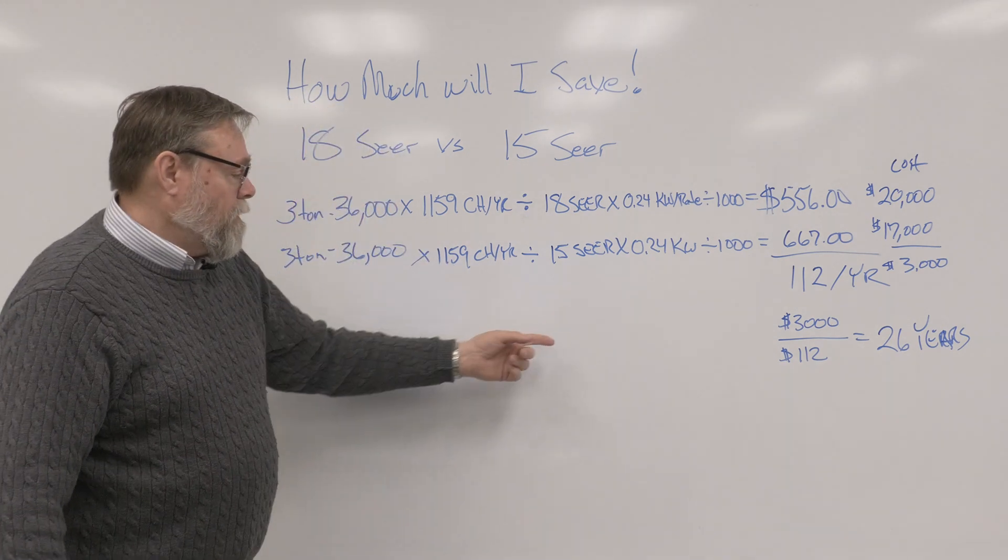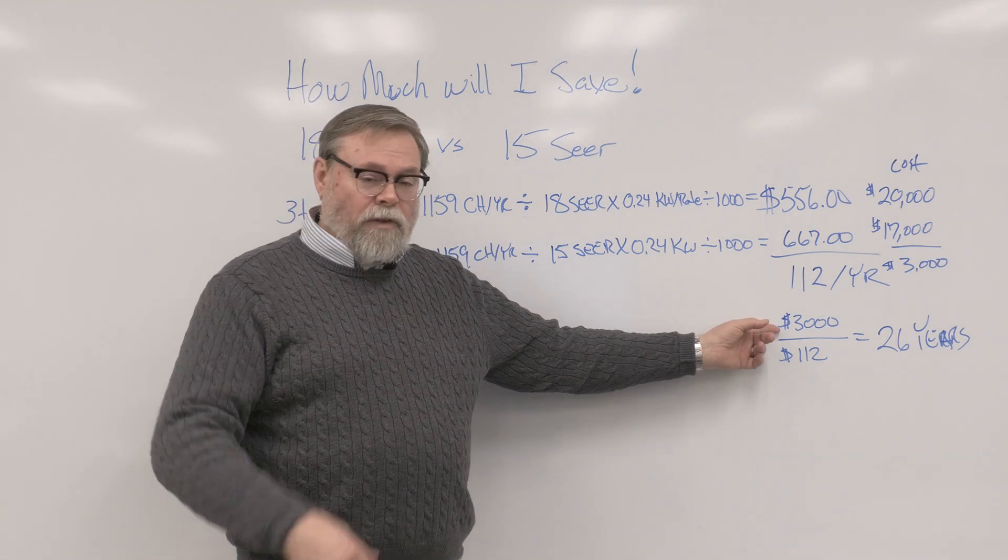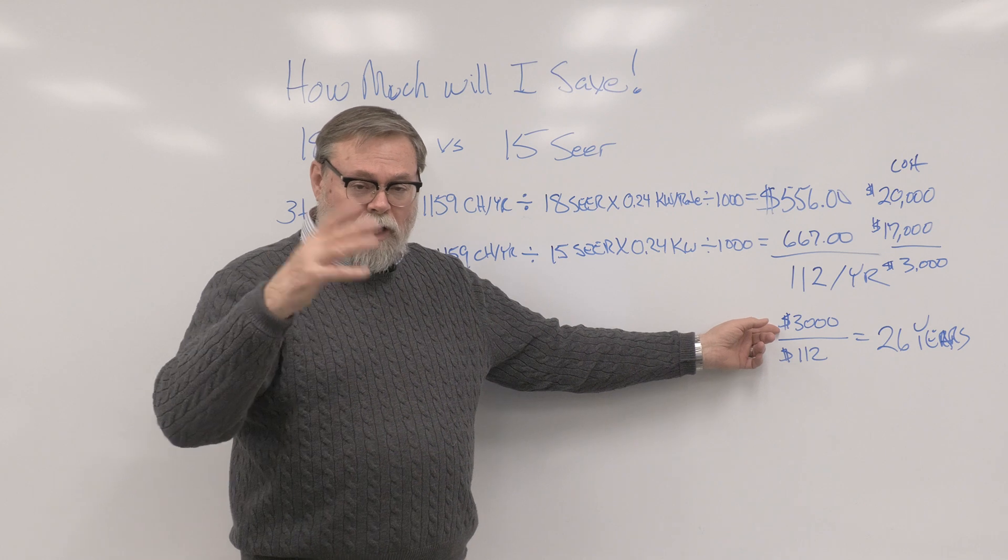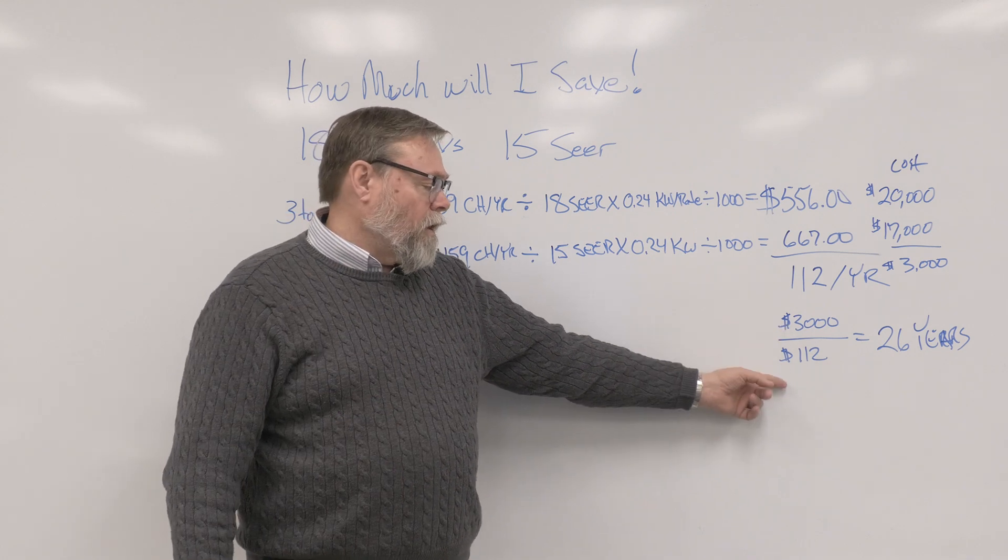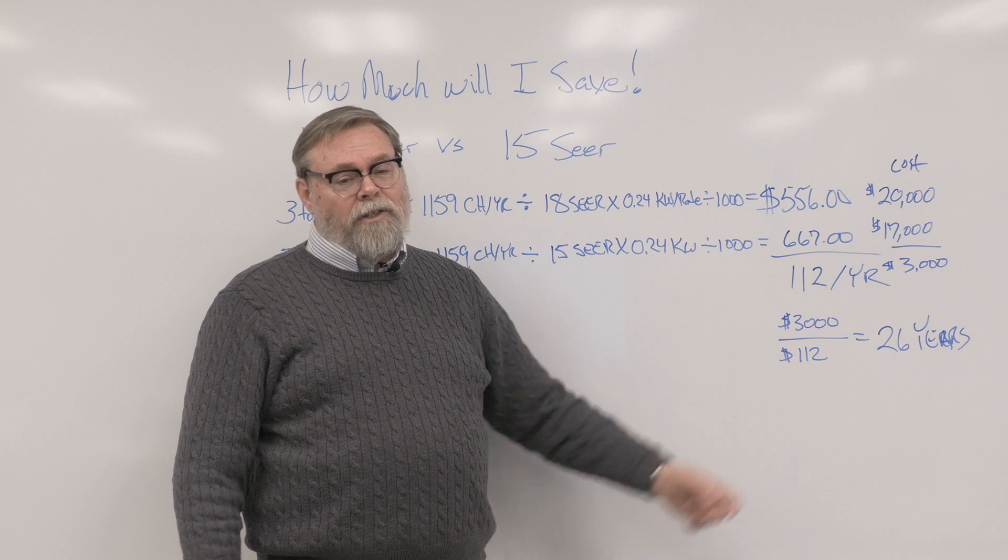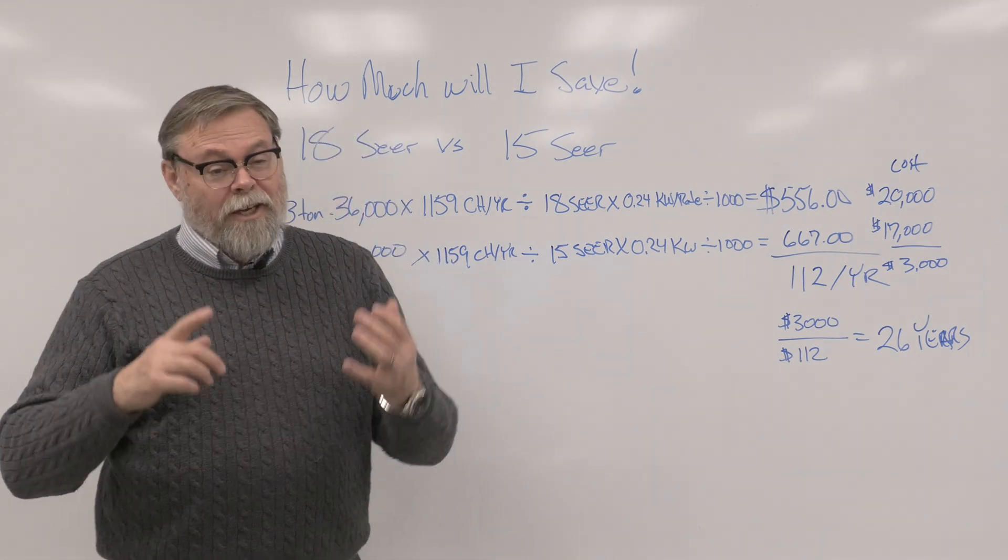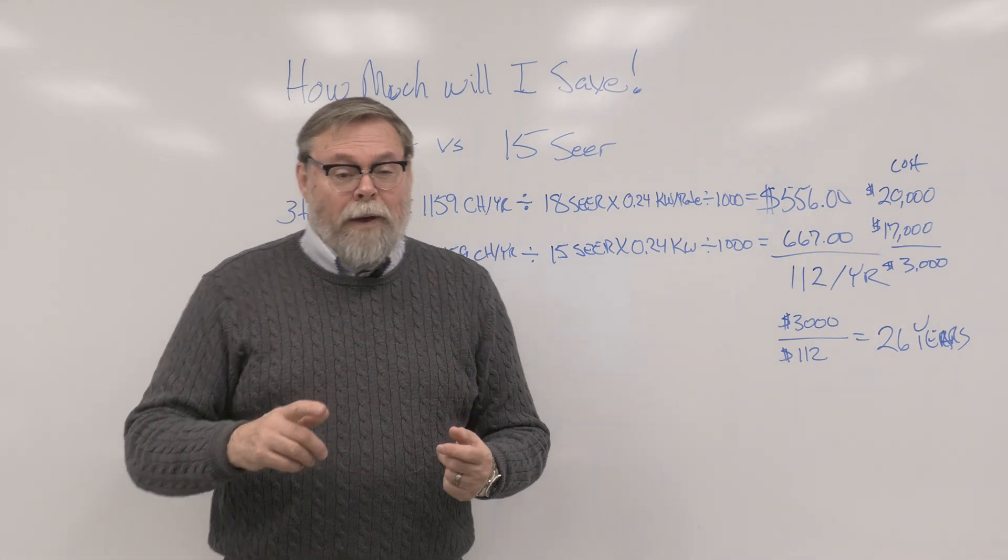And if you take that cost over the life of this, or how long does it take to recoup those dollars, $3,000 divided by $112 equals 26 years. So, it's going to take you 26 years to see payback on that system.